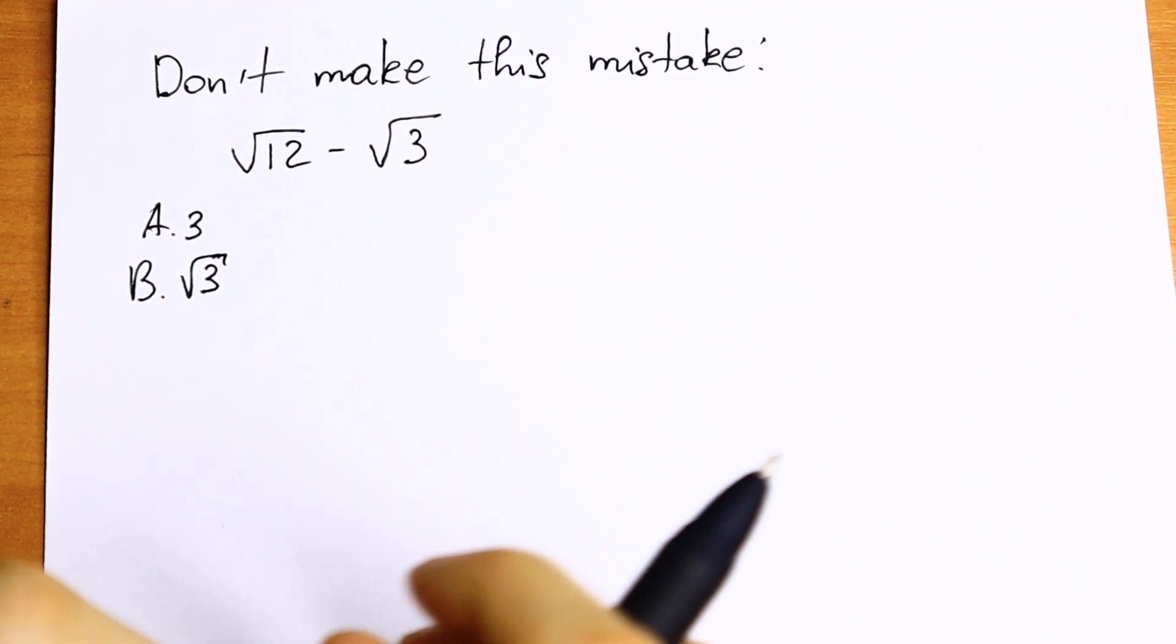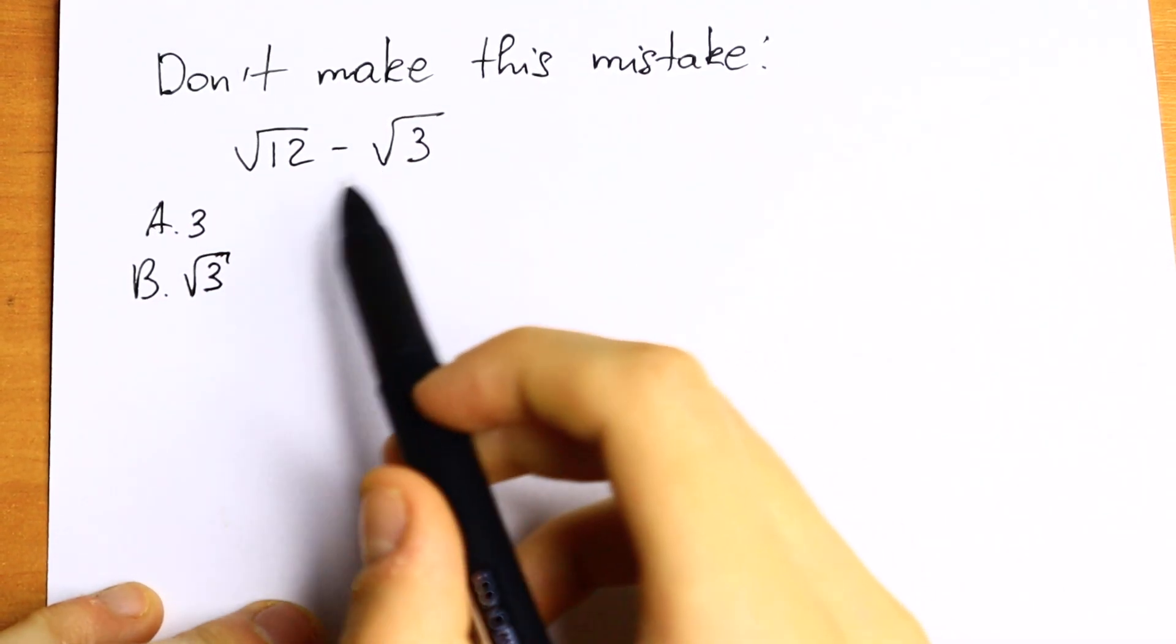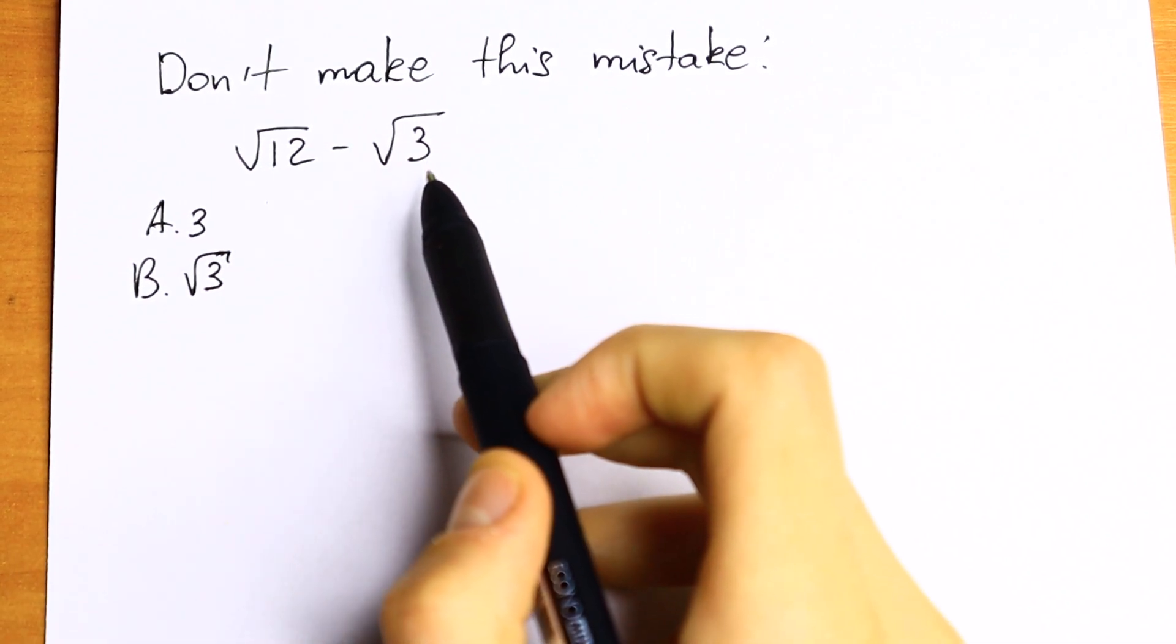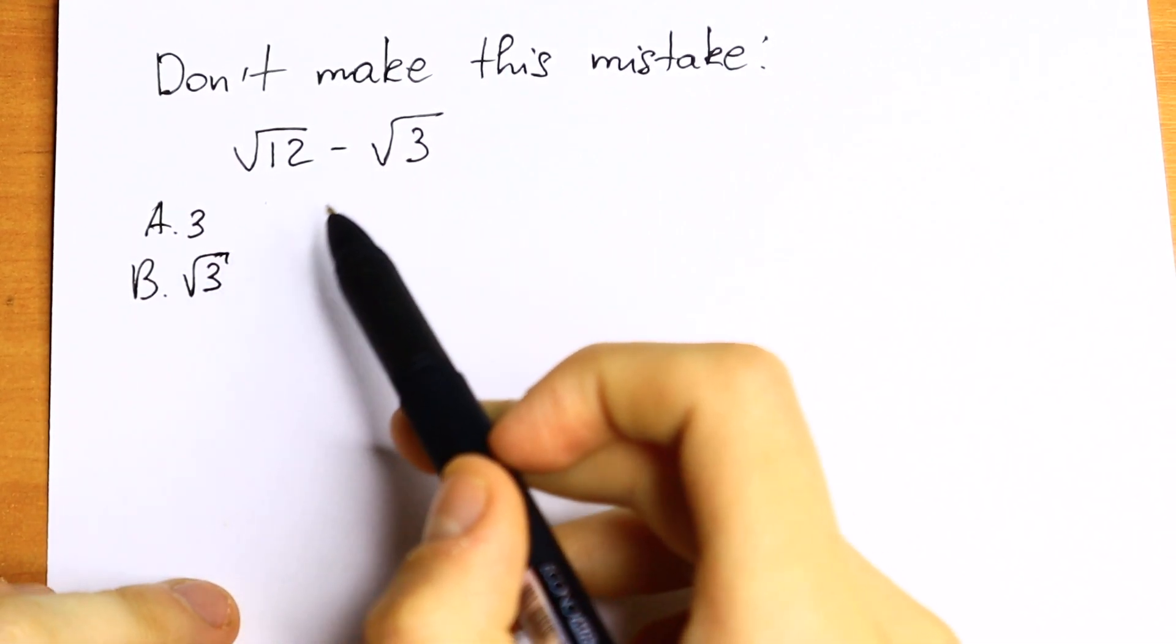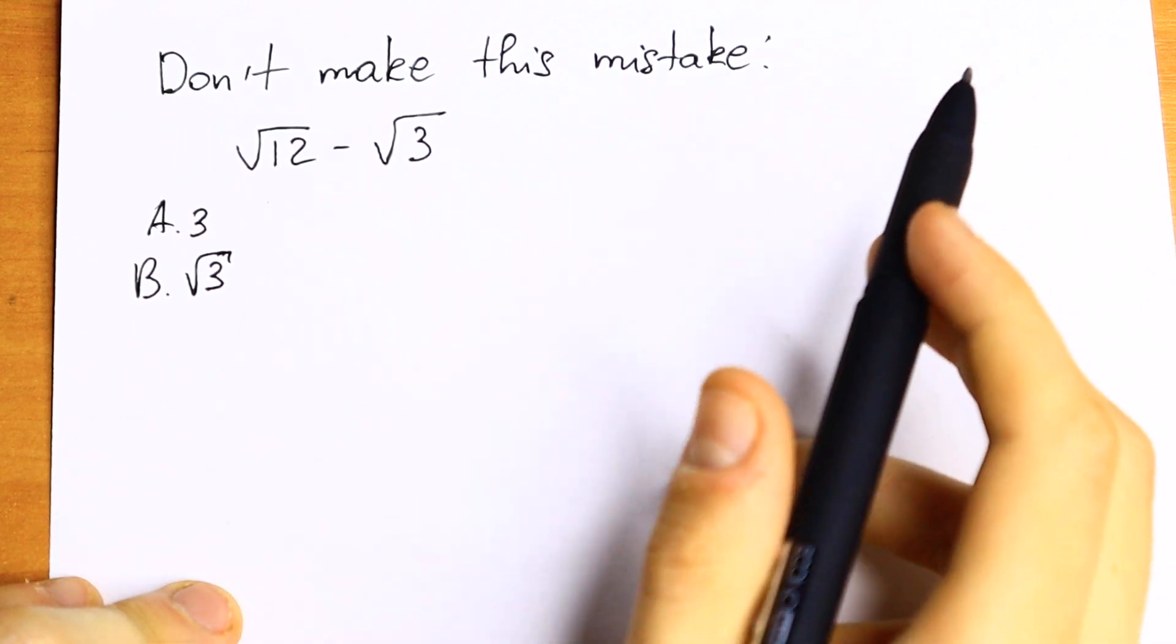Hello everyone, welcome back to Mathmoon. Today we have an interesting algebra problem. We have square root of 12 minus square root of 3, and right here we have an option. Pause the video and write a suggestion in a comment.